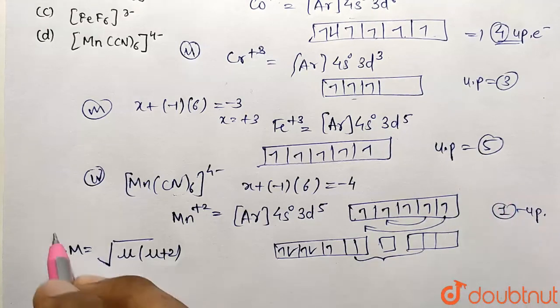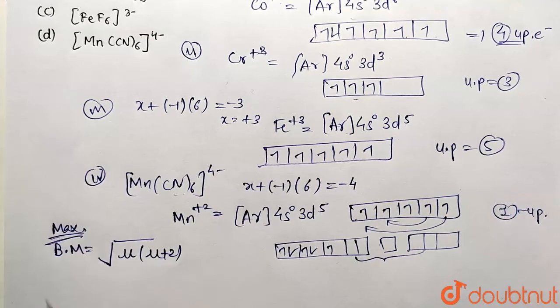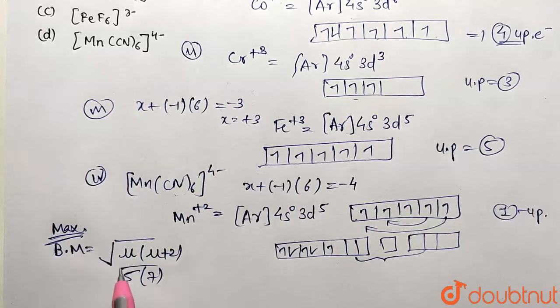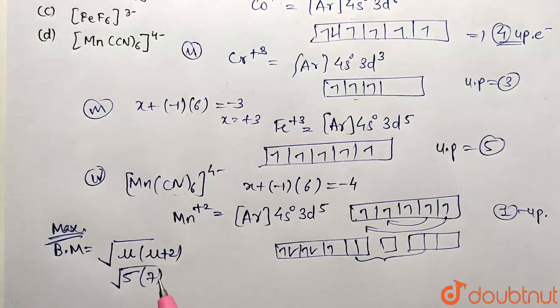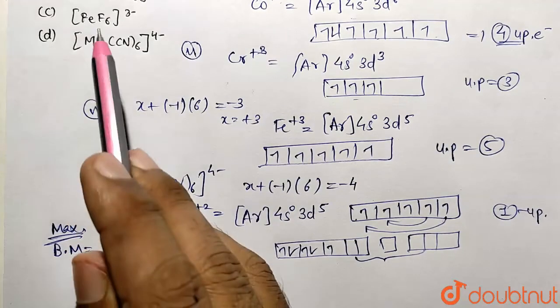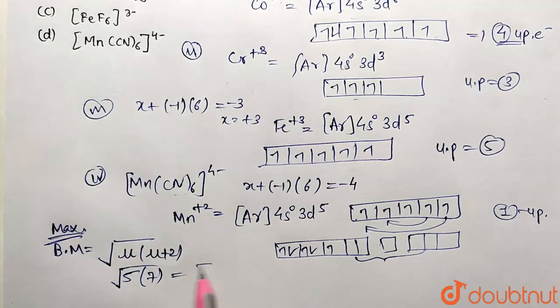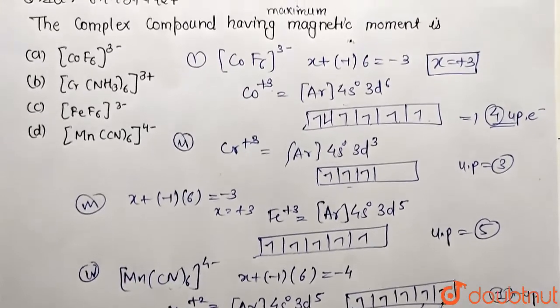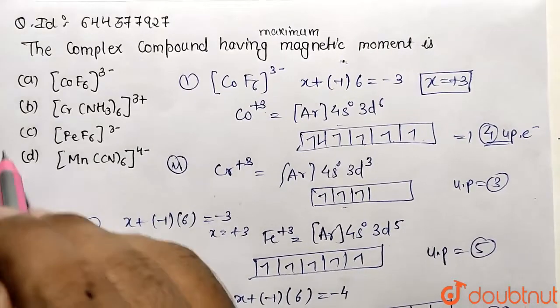So maximum magnetic moment comes for the given complex entity present in option C, and it's going to have the value of √35 as the Bohr magneton value. That's how we have reached the conclusion—option C is the correct answer.